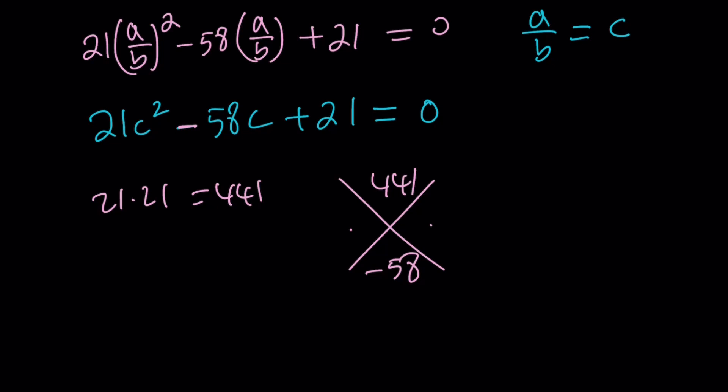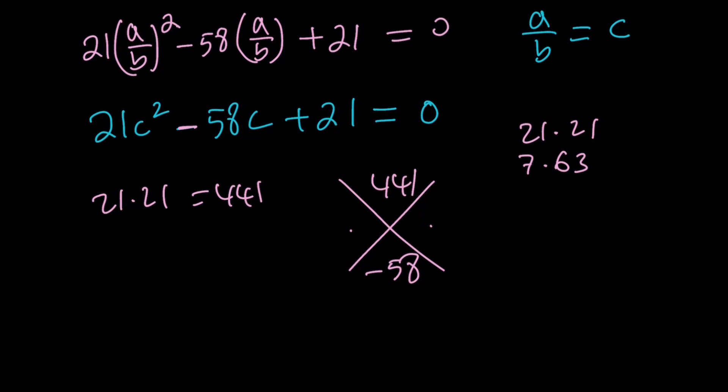You look for two numbers whose product is 441 and whose sum is -58. Obviously, since the sum is negative and the product is positive, you're looking for two negative numbers. And 441 is 21 times 21, so that might give you a clue. I could do 7 times 3, and then 3 can make the 63. These two are not going to give me 58, so that's probably not a good way to break it down.